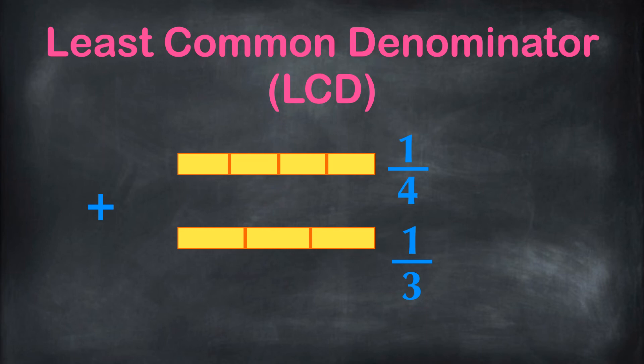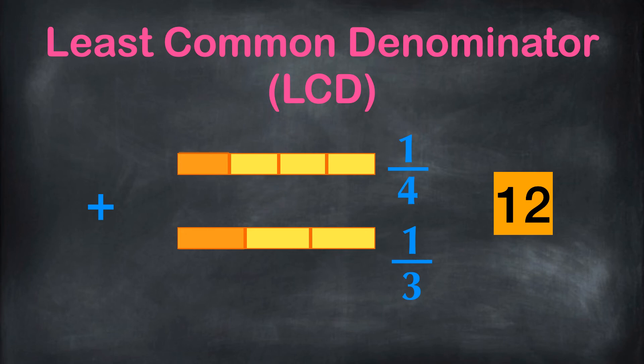This common denominator, short for LCD, is the smallest of all the common denominators. Here we have 1 fourth and 1 third. The denominators 4 and 3 are not the same. We need to find the common denominator. The least common denominator of 4 and 3 is 12.